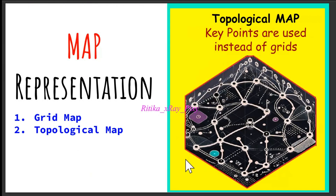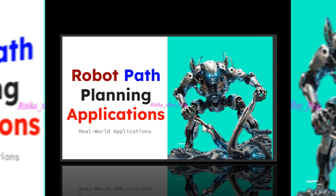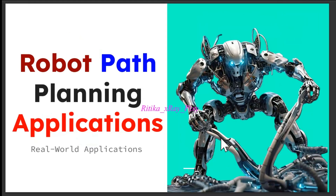We also have topological maps, where instead of grids this method uses key points connected by paths. Robots find connections between important locations like corners. Then we have C-space, or configuration space, which represents all possible locations and orientations the robot can have and ensures the robot avoids obstacles based on its size and shape.